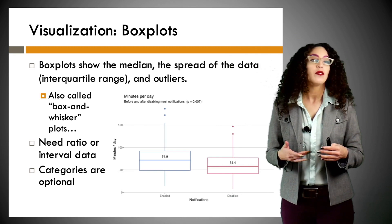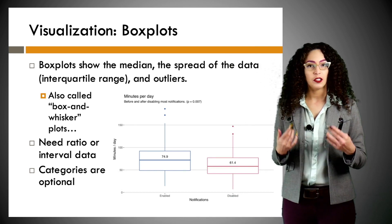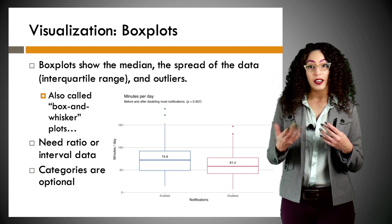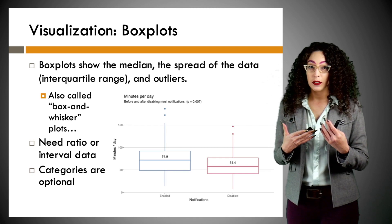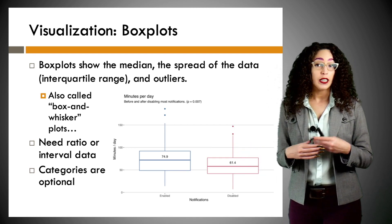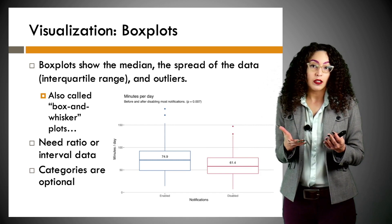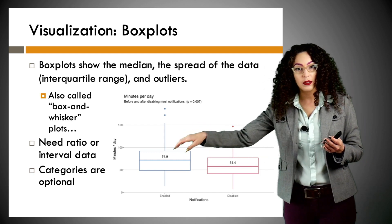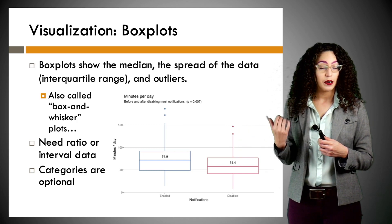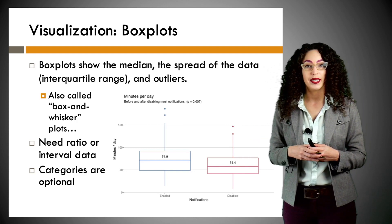Next up we have box plots. We've already looked at some of these when we were looking at the interquartile range, but just for a refresher. They give us median, the spread of the data, and outliers. They're also sometimes called box and whisker plots. You need ratio or interval data — so something continuous — and categories are optional. We have two categories here to represent when this person had their notifications enabled and disabled, and they were seen how many times they checked their phone a day.